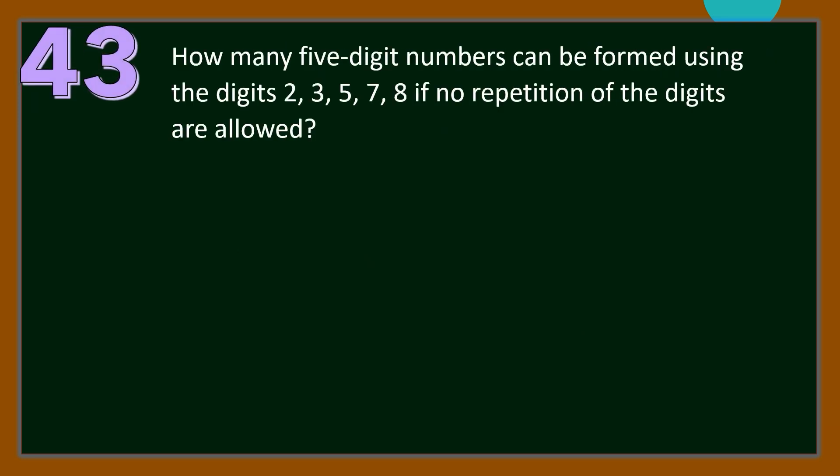Number 43. How many 5-digit numbers can be formed using the digits 2, 3, 5, 7, 8 if no repetition of the digits is allowed? For our solution, we are going to use the fundamental counting principle. Since we are forming 5-digit numbers, we have the 1st, 2nd, 3rd, 4th, and 5th digits. For the 1st digit, we have 5 choices: 2, 3, 5, 7, and 8.